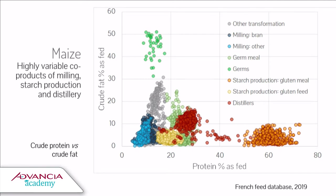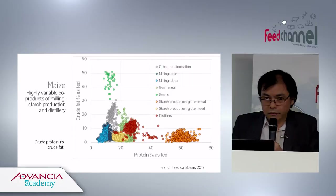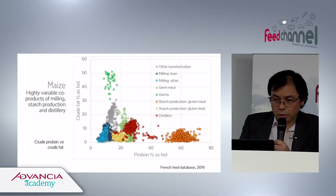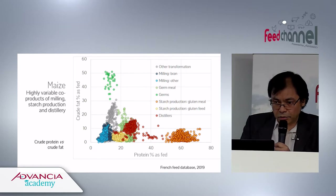On the other side of the graph, we have maize germs — crude, unextracted germs — with crude fat content ranging from 30 to 50%. So there is very large variation between each category of by-products.